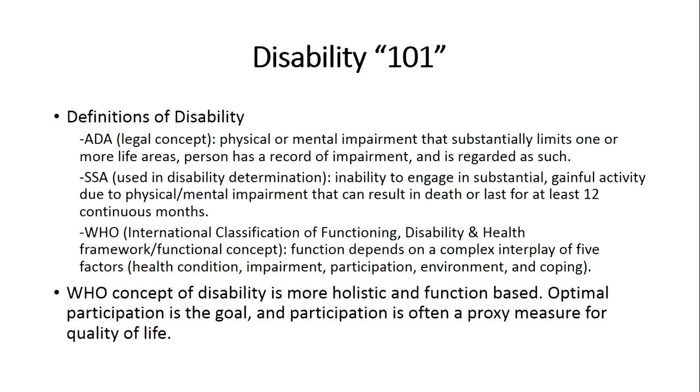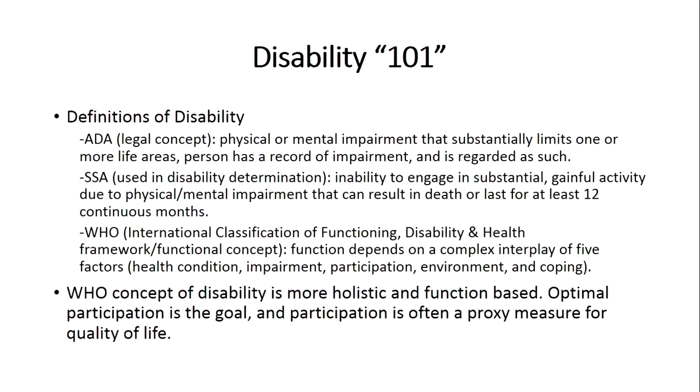We also have a definition from the Social Security Administration, used in determinations about whether people will receive Social Security Disability Income (SSDI) or Supplemental Security Income (SSI). That definition says a disability is the inability to engage in substantial gainful activity due to a physical or mental impairment that can result in death or is expected to last for at least 12 continuous months.